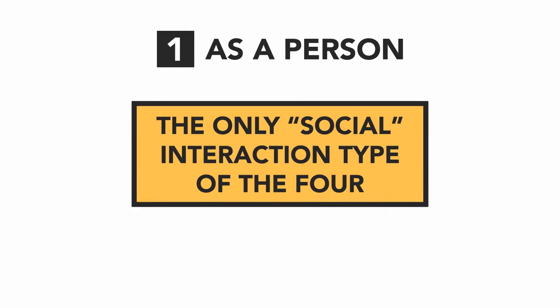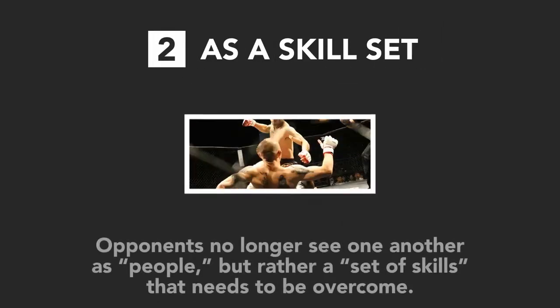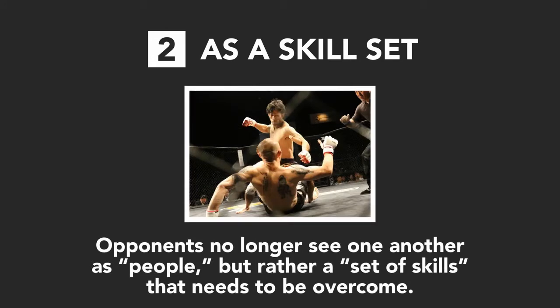The first is as a person, which is the only social interaction type of the four. Opponents recognize each other as human beings and merely attempt to change one another's behavior. The second is as a skill set, where opponents no longer see one another as people, but rather as a set of skills that needs to be overcome.